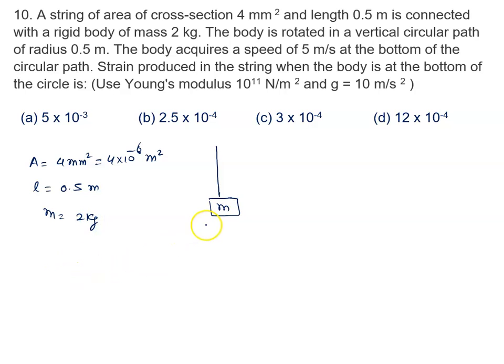The body is rotated in a vertical circle. The radius of the circular path is given to us, that is 0.5 meter. It means it is hinged at the topmost point and it is moving in the vertical circle.